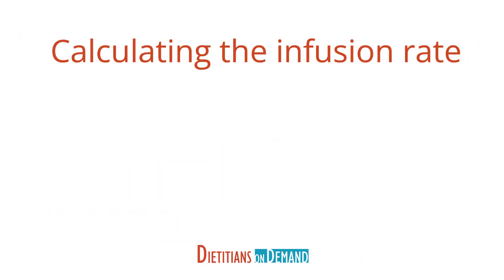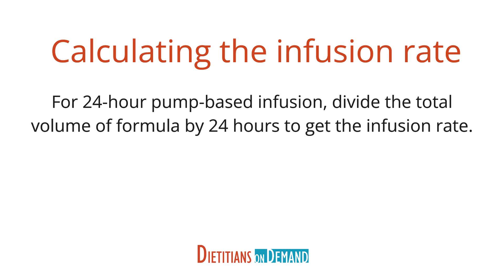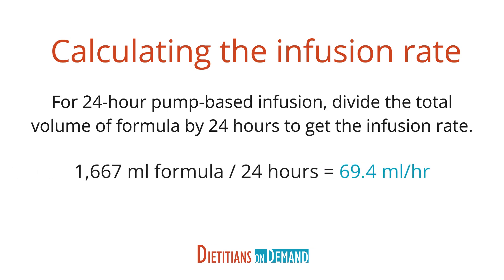The last step is to determine the infusion rate. If we are giving a 24-hour pump-based infusion, we divide the total volume of formula by 24 hours to get the infusion rate: 1,667 milliliters divided by 24 hours equals 69.4 milliliters per hour. It's okay to round this number to the next five or ten — in our case, you can round to 70 milliliters per hour.